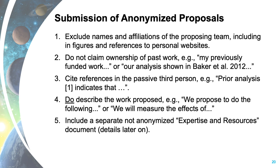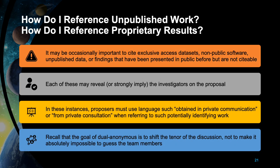A very common question is how to reference unpublished work or proprietary results. We understand that it may occasionally be important to cite exclusive-access datasets, non-public software, or unpublished findings presented elsewhere but not yet citable — each of which may reveal or strongly imply the investigators. In these instances, we recommend using language such as 'obtained in private communication' or 'from private consultation' when referring to such potentially identifying work.